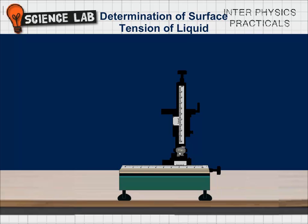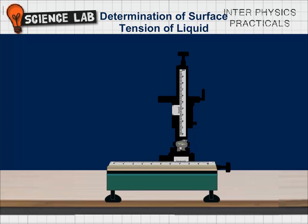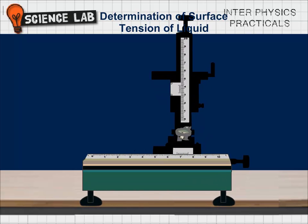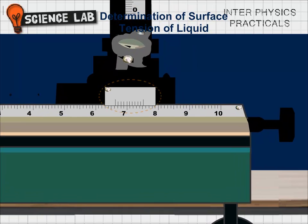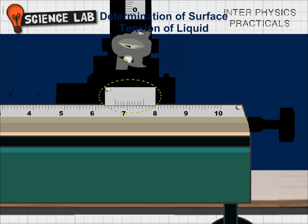We need a travelling microscope to perform the surface tension experiment. A travelling microscope is used to measure length accurately. It has horizontal and vertical main scales and verniers. One division on the horizontal main scale S is equal to 1 mm. Number of divisions on the horizontal vernier scale n is 10. Least count of the horizontal scale is S/n = 1/10 = 0.1 mm = 0.01 cm.